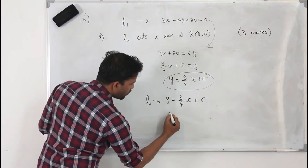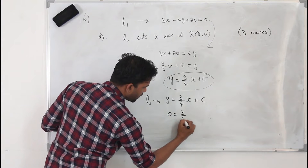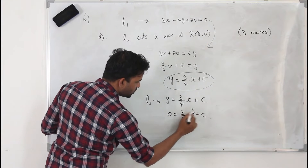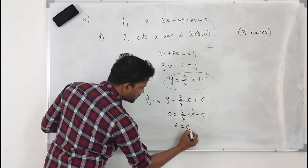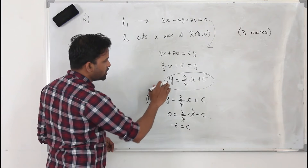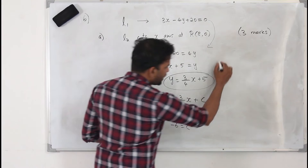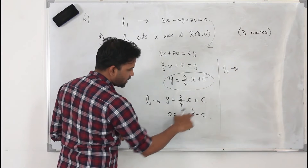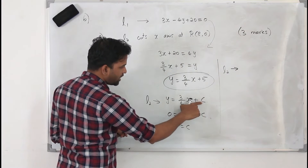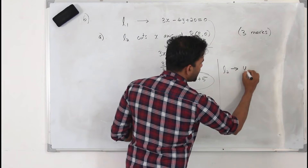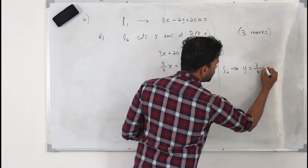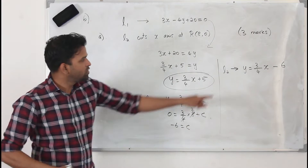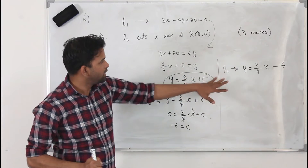Substituting: 0 equals 3/4 times 8 plus c, so 0 equals 6 plus c, giving c equals minus 6. Therefore the equation of L2 is y equals 3/4 x minus 6.